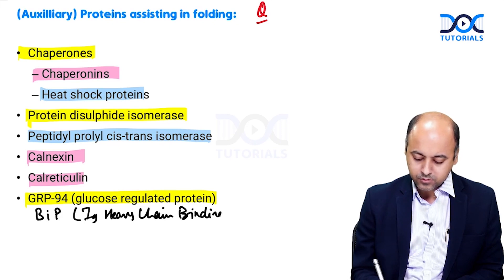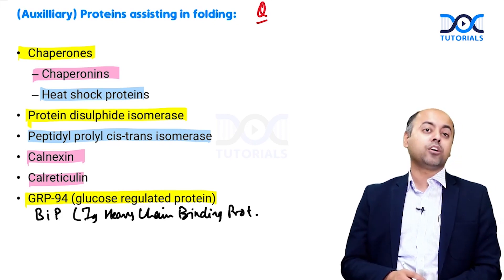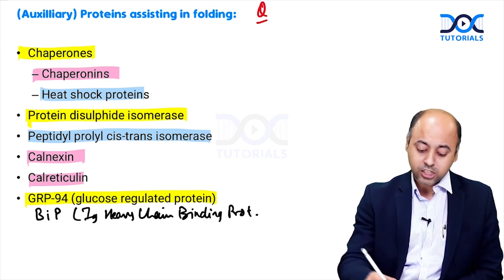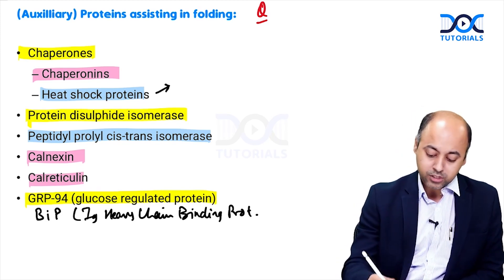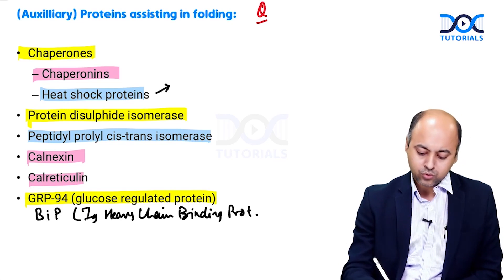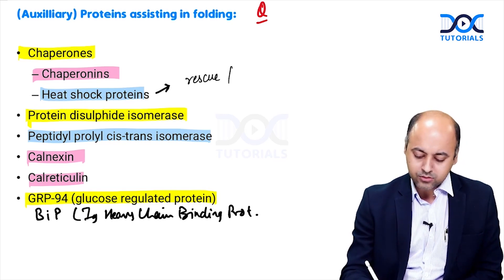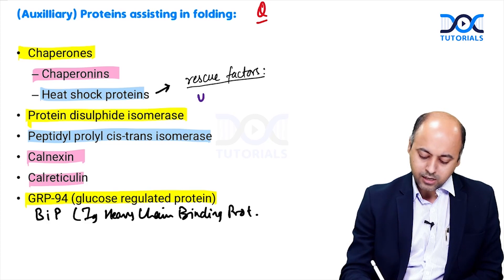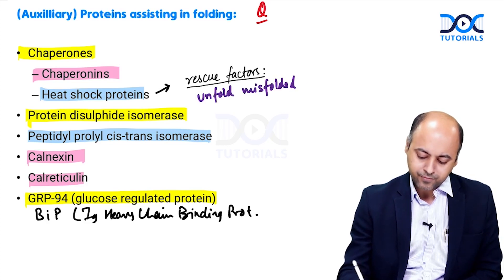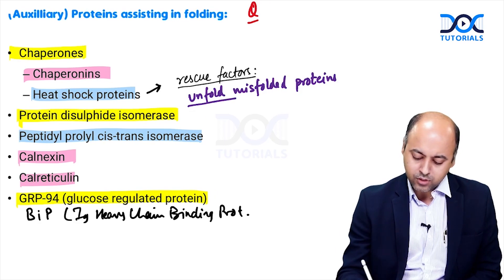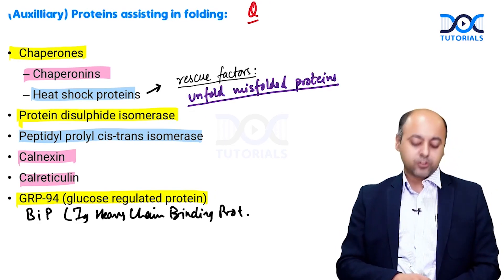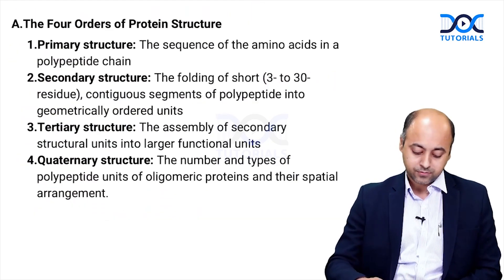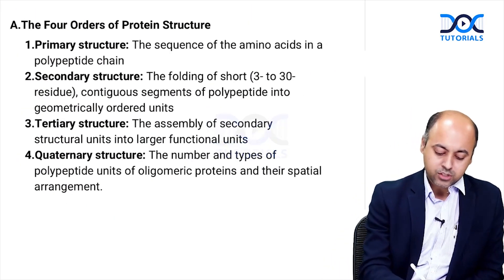These are some of the very important auxiliary proteins which assist in folding. Please note: heat shock proteins are also known as rescue factors, because they unfold misfolded proteins. Therefore they are also known as rescue factors.